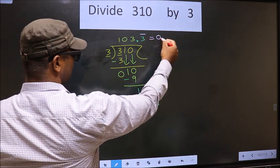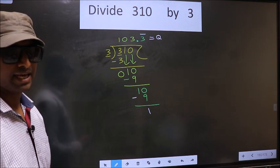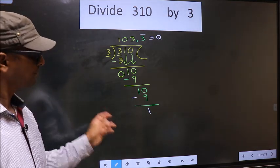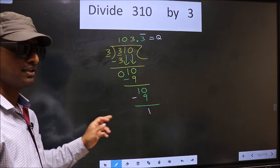So this is our quotient. Did you understand where the mistake happens? You should not make that mistake. Am I clear?